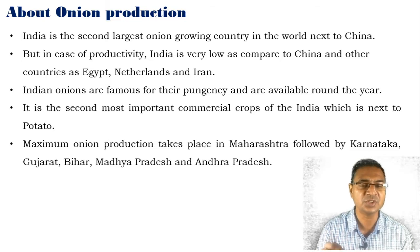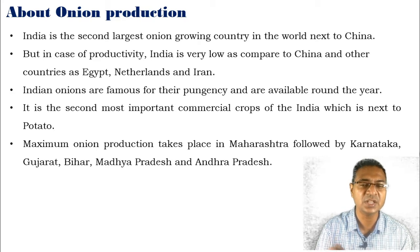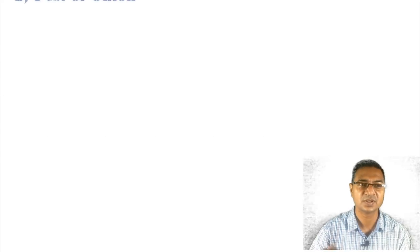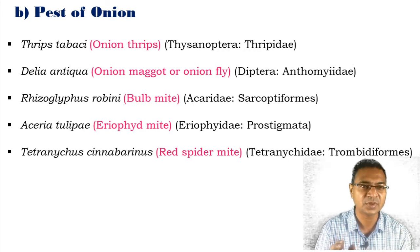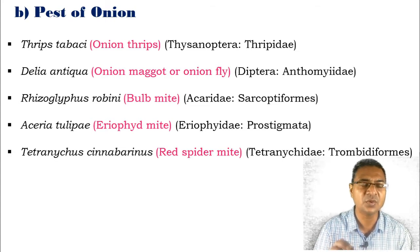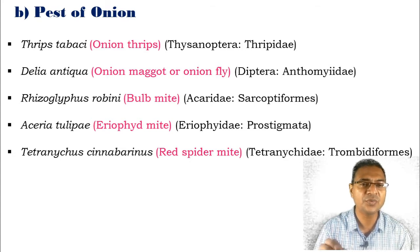Maximum onion production is in certain states of India, especially Maharashtra, Karnataka, Gujarat, Bihar, Madhya Pradesh, and Andhra Pradesh. About the pest of the onion: so many pests attack the onion plant and decline their productivity due to infestation. Some of these are onion thrips, onion maggot or onion fly, bulb mite, eriophid mite, and red spider mite.